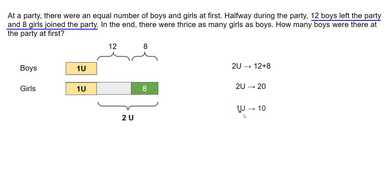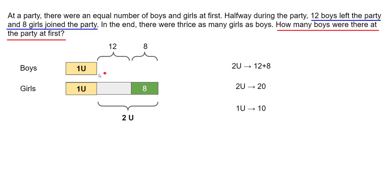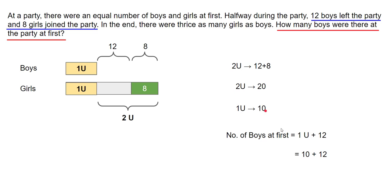One unit represents 10 students. Coming back to the question — how many boys were there at the party at first? The number of boys at first was 1 unit plus 12, which is 10 plus 12, so the number of boys at the party at the beginning was 22.